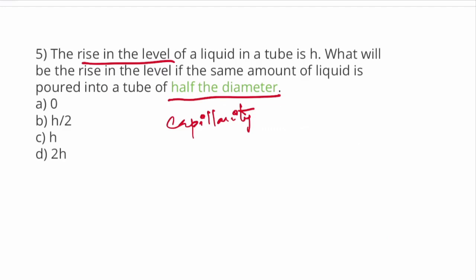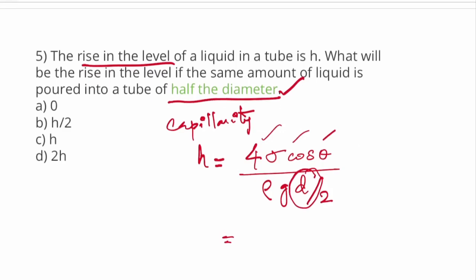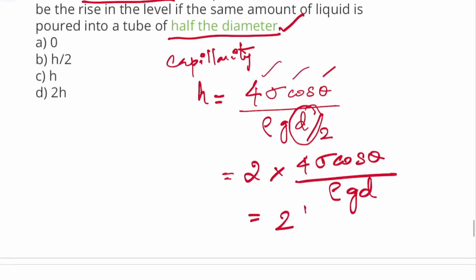The formula is h equals 4s cos theta divided by ρgd. All values are constant but d value changes. If diameter is half, then rise is 2 times h. So if diameter becomes half, the rise becomes 2 times.